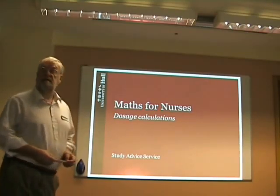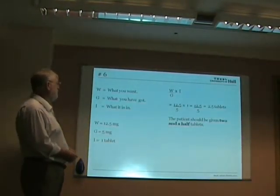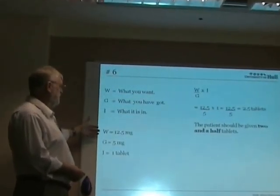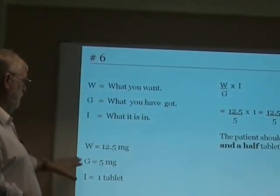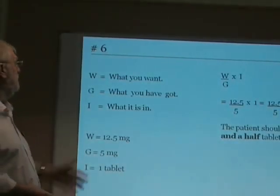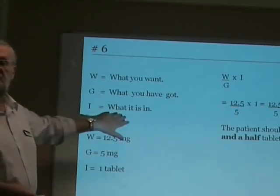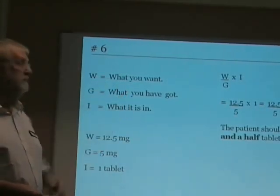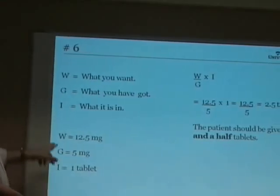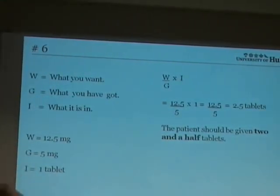Our final example is again another one of a drug being prescribed in tablet form, and here the patient is prescribed 12.5mg. What we've got is tablets which contain 5mg of the drug. So again: want, got, in — and remember, for tablets, 'in' is always just one tablet. We substitute in the formula: want is 12.5, got is 5, and in is 1.